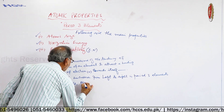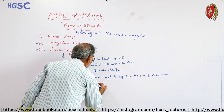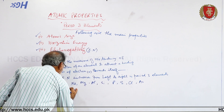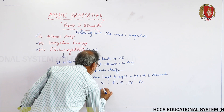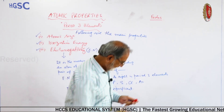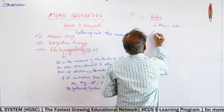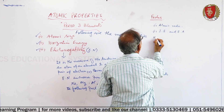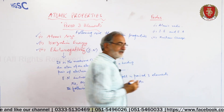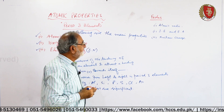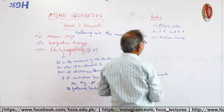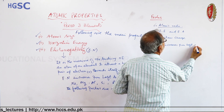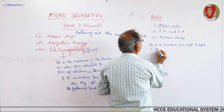Electronegativity increases from left to right in period three elements — sodium, magnesium, aluminum, silicon, phosphorus, sulfur, chlorine, argon. The following factors are significant: number one, atomic radius; number two, ionization energy and electron affinity; number three, nuclear charge. These are the three factors which are very significant. The electronegativity increases from left to right in period three elements.